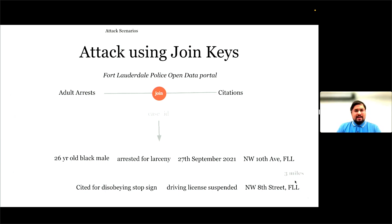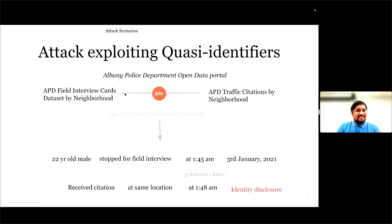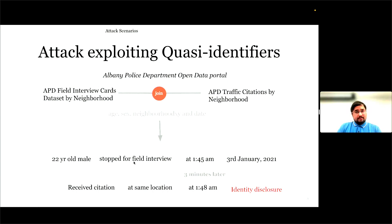Next, we asked: can these datasets be joined even if there are no direct ID fields? We tried to join datasets based on quasi-identifier fields. When two datasets from the Albany Police Open Data portal were joined based on age, sex, neighborhood, and date, we found that a 22-year-old male who was stopped for a field interview at 1:45 a.m. received a citation at the same location just three minutes later. This is an example of identity disclosure while joining open datasets based on quasi-identifiers.